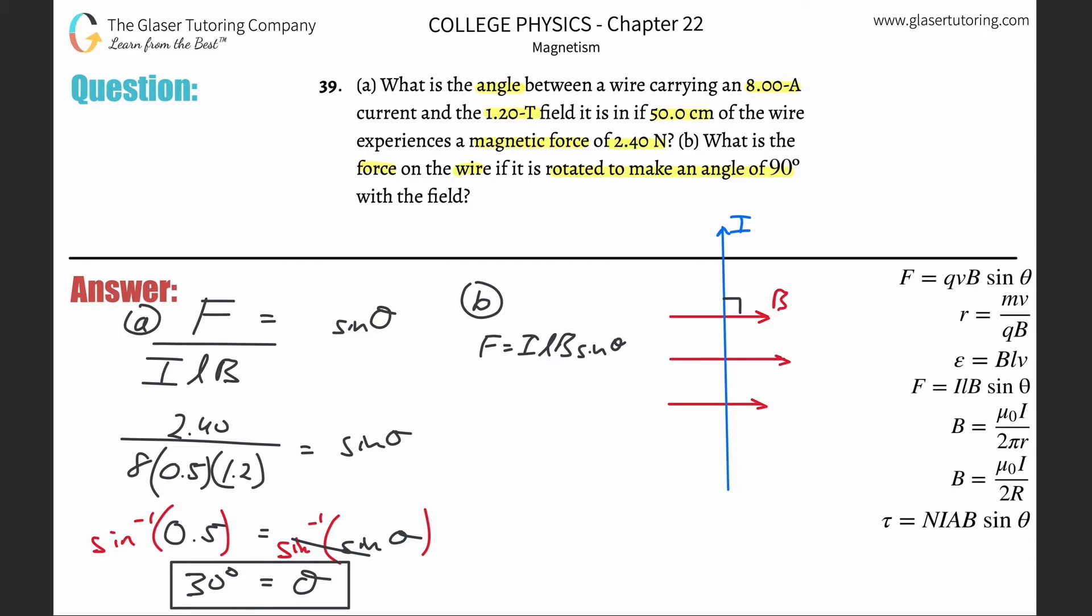In order to find force, I've got to know these four things. Do we know the length? Yeah, that length didn't change. Do we know the magnetic field? Sure, that didn't change. Do we know the angle now? Sure, that's 90 now. And do we know the current? Sure, that didn't change. So all you've got to do is just plug it all in.